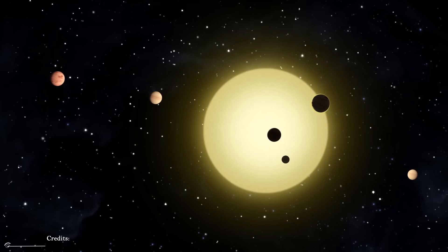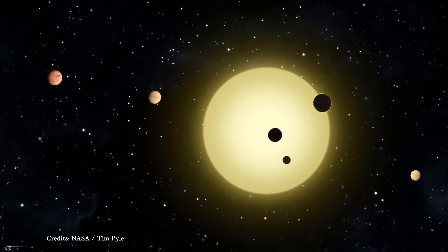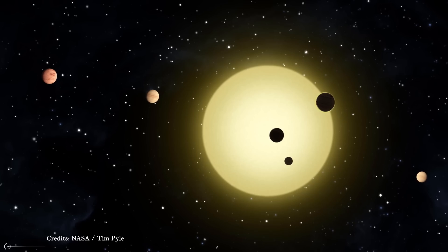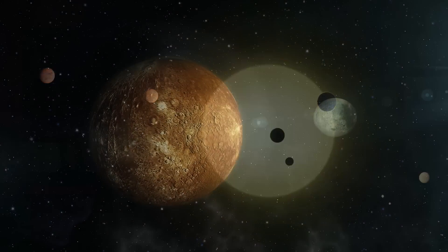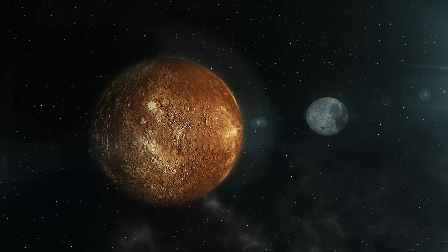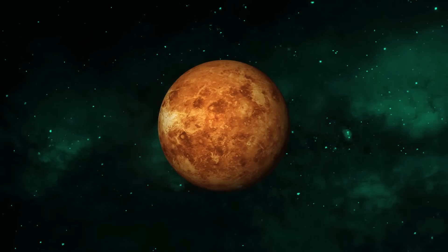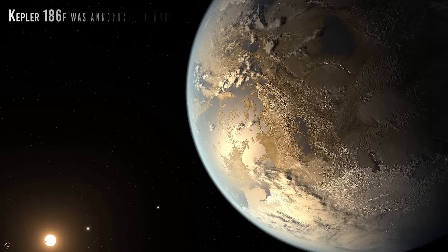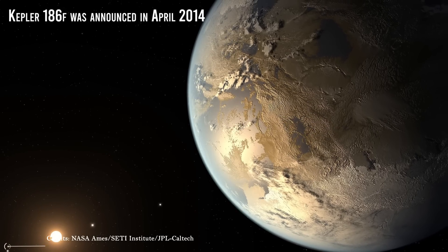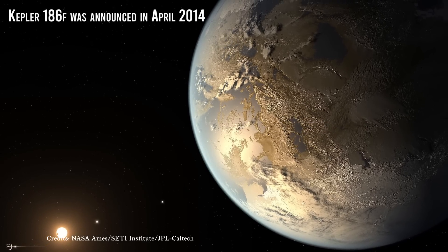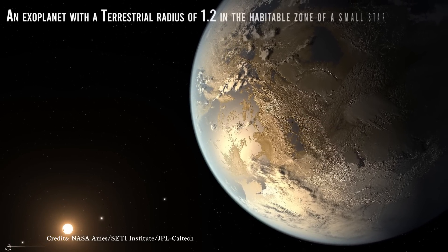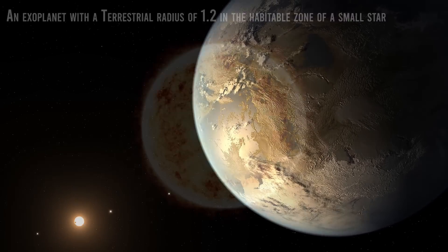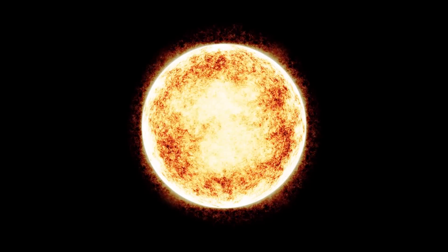When Kepler began collecting information, no one predicted that something like the Kepler 11 star system would be detected, which contains five planets, most of them in orbits smaller than the orbit of Mercury, and the outermost of which would fall into the orbit of Venus. Or the system Kepler 186f was announced in April of 2014, an exoplanet with a terrestrial radius of 1.2 in the habitable zone of a small star, only half the size and mass of the Sun.